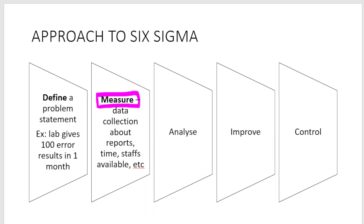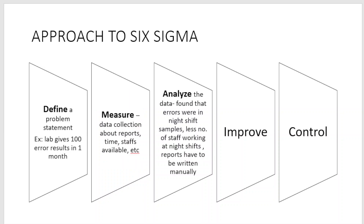The next step is Measure — in this step you collect the data. For example, when the lab gives 100 error test results, you collect statistical data pertaining to this: the reports, time of sampling, time the error reports were reported, staffs available, and in which shift the errors are maximum. This thorough statistical data collection is the Measure phase.